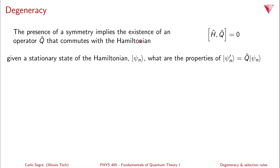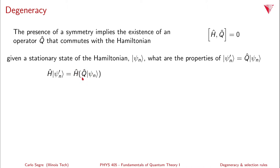So if we have a stationary state psi sub n, we have a question: what are the properties of psi prime sub n, where psi prime is equal to Q applied to psi sub n? We take this state, apply the Hamiltonian, and we have H applied to psi prime sub n, which is H applied to Q psi sub n. Because H and Q commute by definition, we can rewrite this as Q H applied to psi sub n.